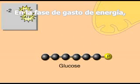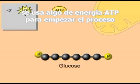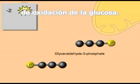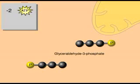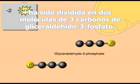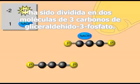In the energy investment phase, some ATP energy is used to start the process of glucose oxidation. By the end of this phase, a six-carbon molecule, glucose, has been split into two three-carbon molecules of glyceraldehyde phosphate.